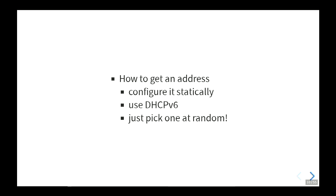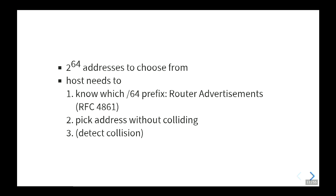How do you get an address in IPv6? You can configure it statically. You can use DHCPv6, very similar to v4. And you can just pick one at random — that's a new thing, because you have 2 to the power of 64 addresses. So you fire up your random number generator and pick an address. You need to know the prefix from router advertisements, and you need a way to pick addresses without colliding. The duplicate address detection mechanism stays in the kernel.